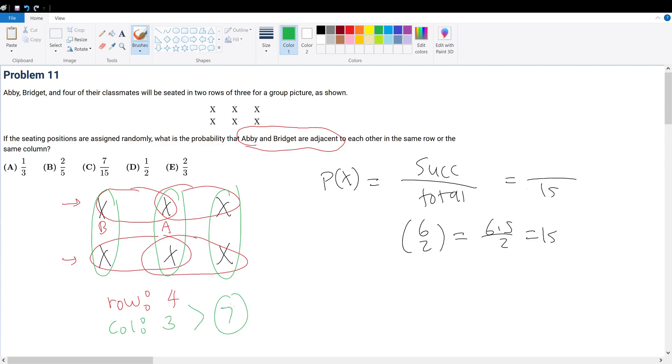The sum gives us the total valid combinations. So we have seven successes over 15, which is answer choice C.